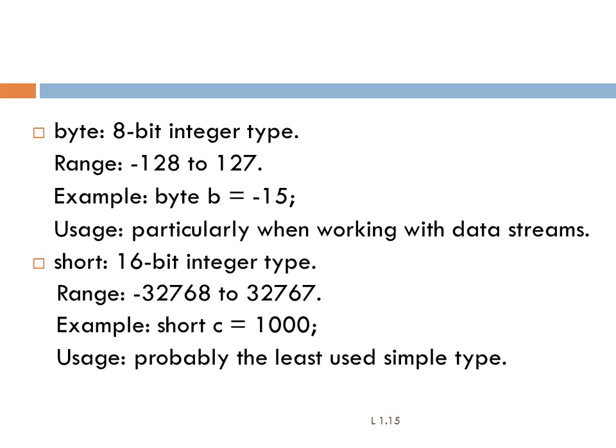Byte is an 8-bit integer type. The range is minus 128 to 127. A variable can be created as: b = -15. This data type will be mainly used in streams — when we are reading data from a stream, the stream may read byte by byte, so we use this byte data type.